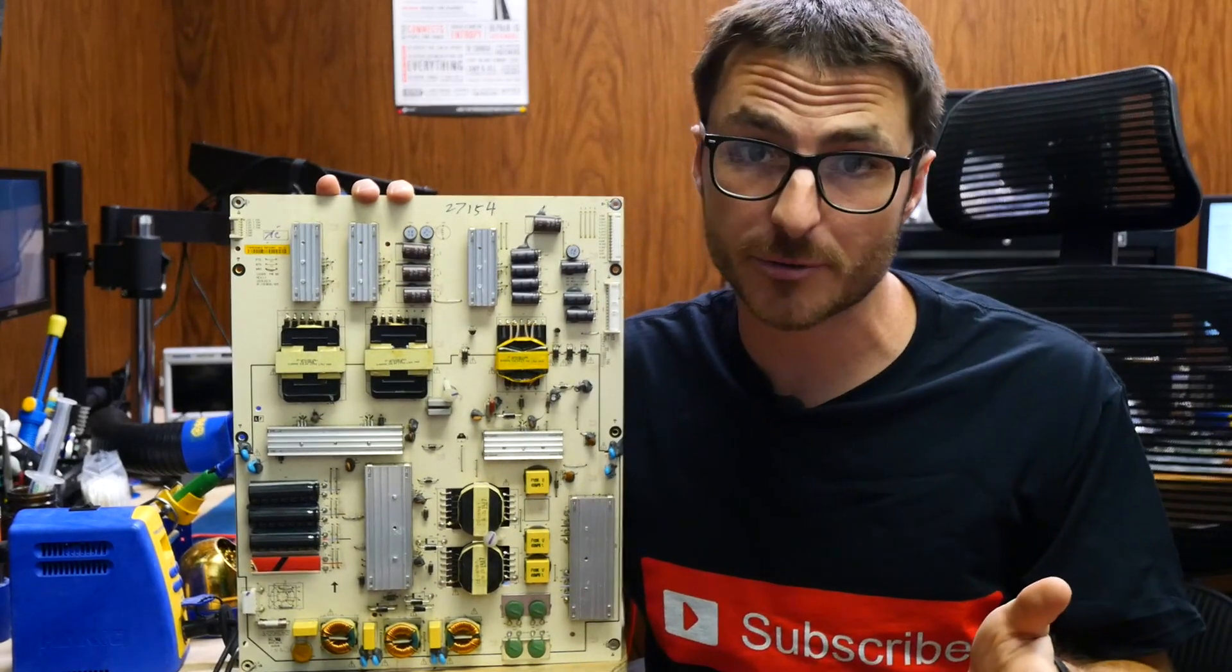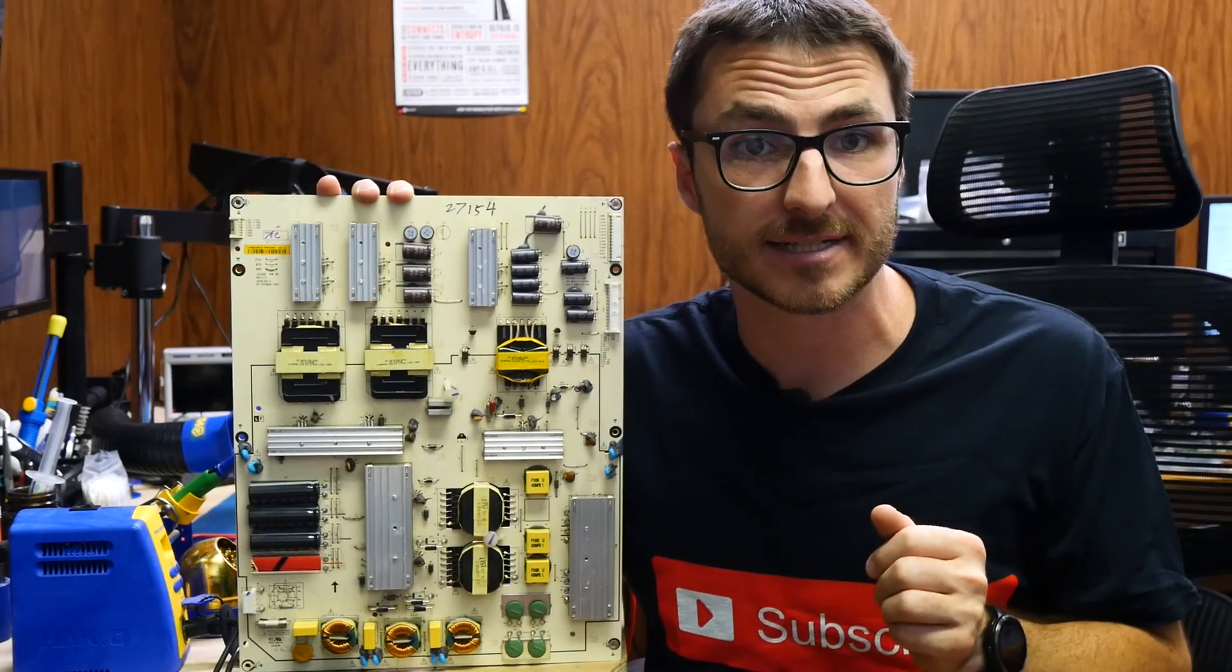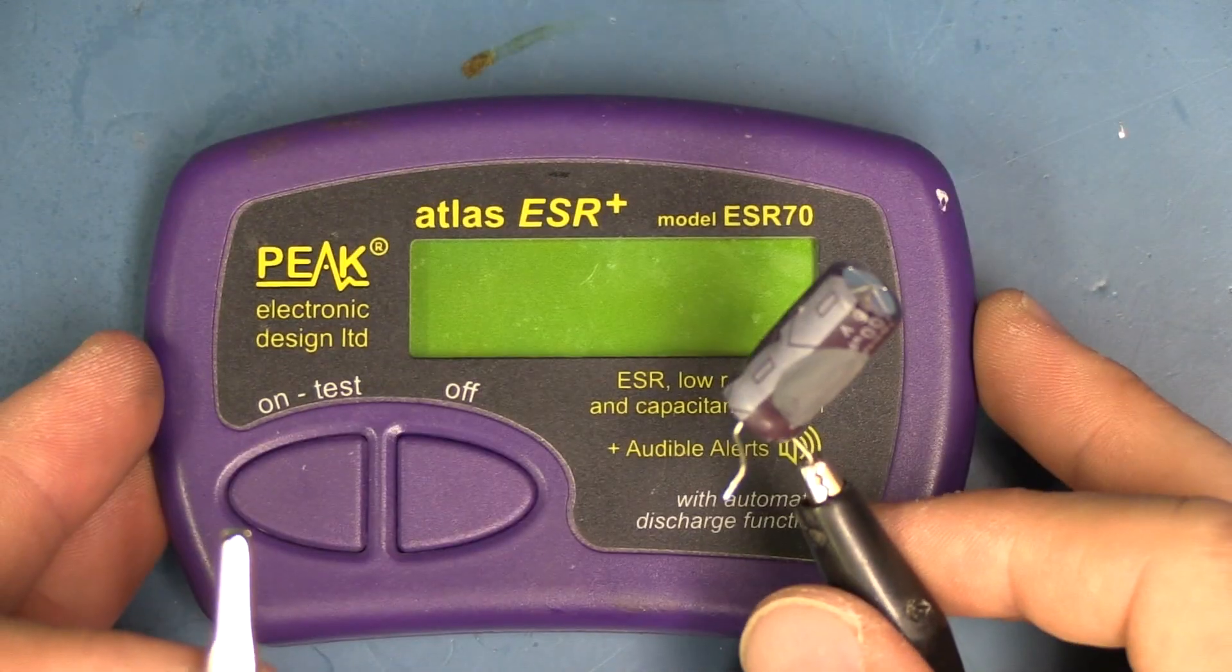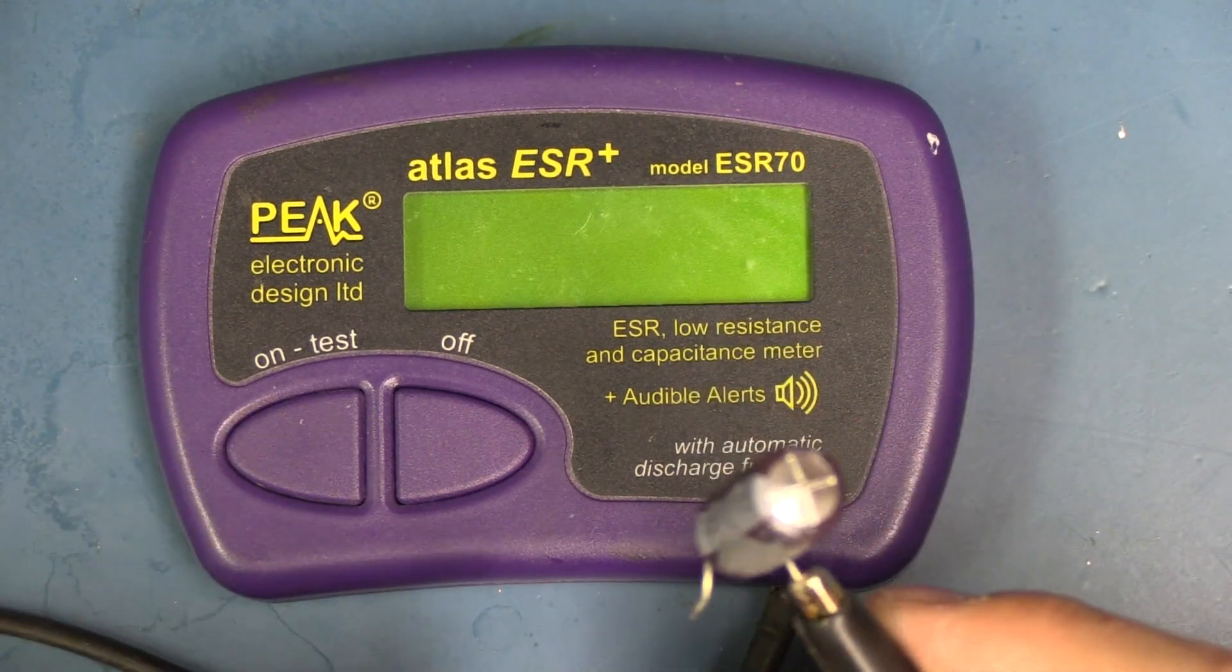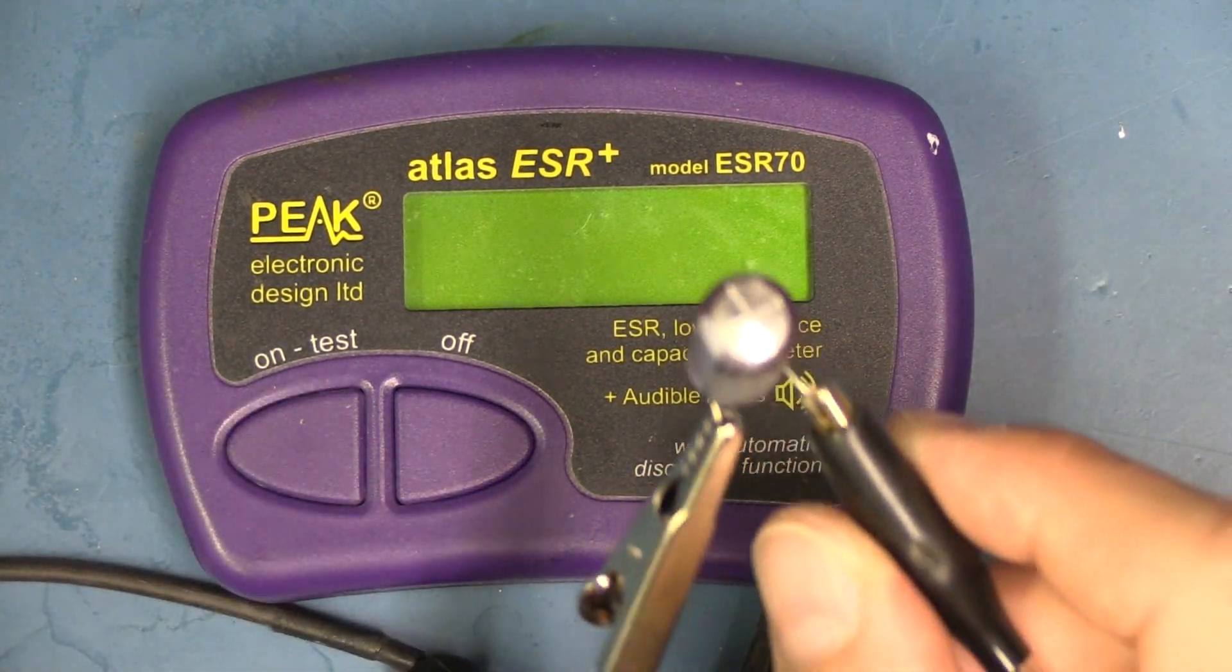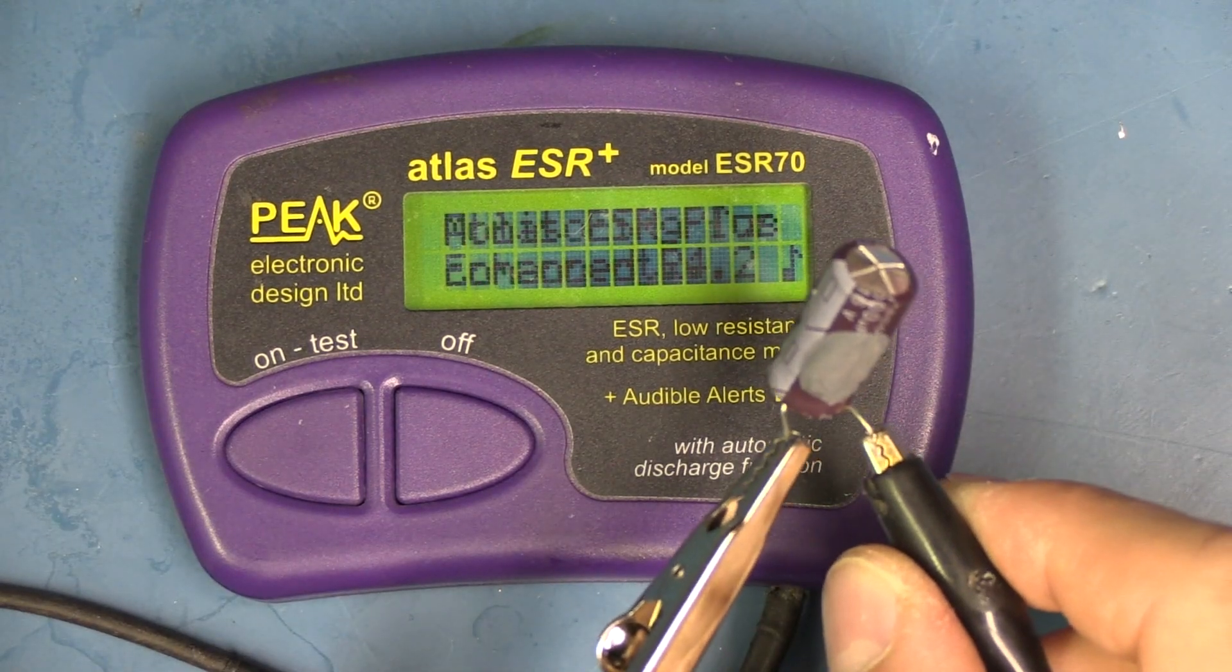Now before we start the repair, I did tell you we're going to show you a more advanced diagnostic technique. The advanced technique involves having an ESR meter such as this one, and once we have the capacitor removed out of circuit, we can connect it directly.